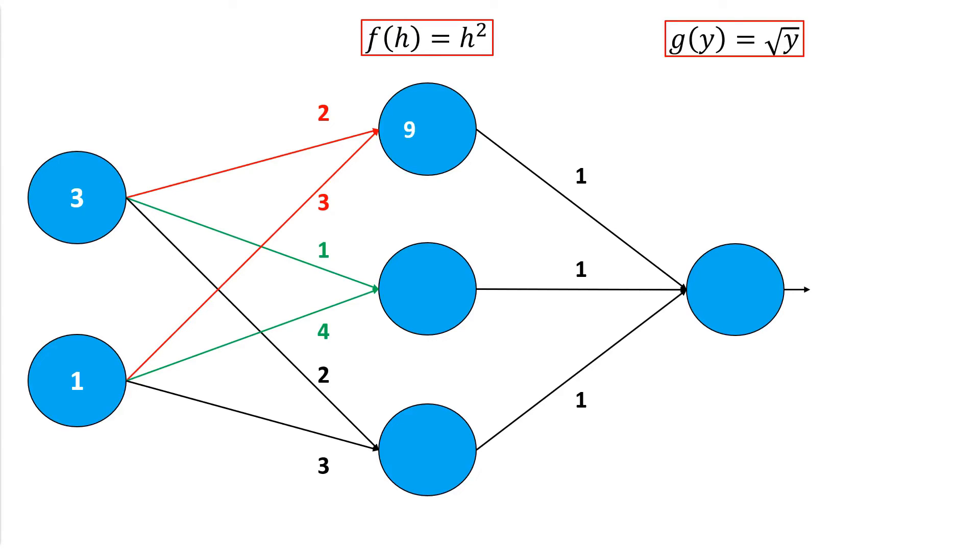I need to do the same for h2: 3 times 1 plus 1 times 4, which is 7. And the last one: 3 times 2 plus 1 times 3, which is also 9.